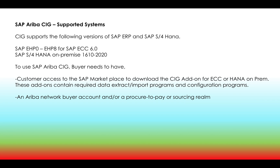SAP Ariba CAG supported systems: CAG supports SAP ERP EHP 0 to EHP 8 for SAP ECC 6.0, and SAP S/4HANA on-premise versions 1610 to 2020. SAP provides add-ons for these systems only. To use SAP Ariba CAG, the buyer needs customer access to the SAP Marketplace to download the CAG add-on for ECC or S/4HANA on-premise. These add-ons contain the required data extract, import programs, and configuration programs.